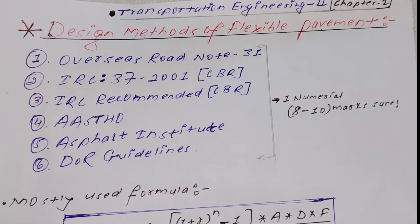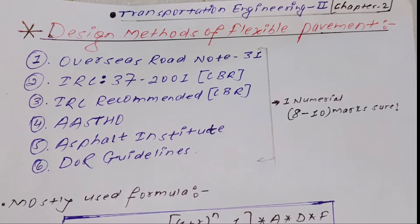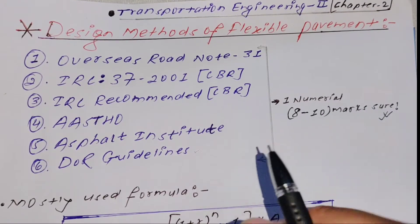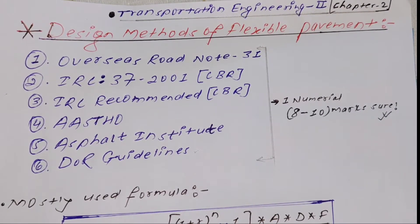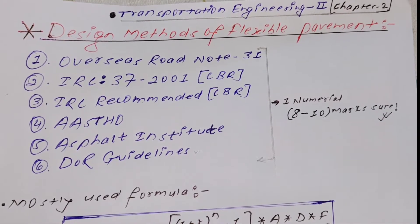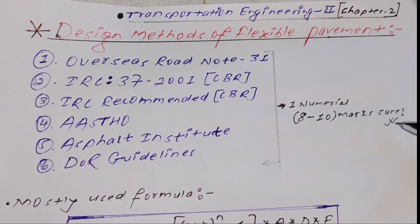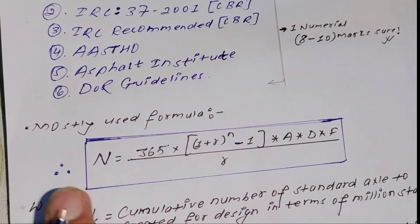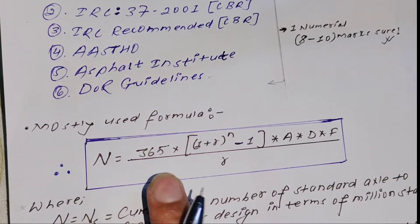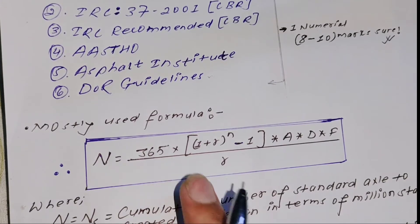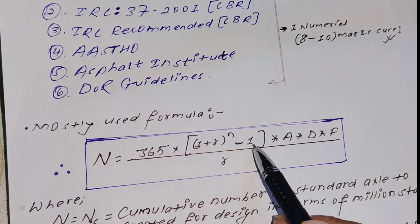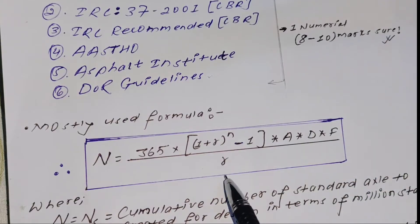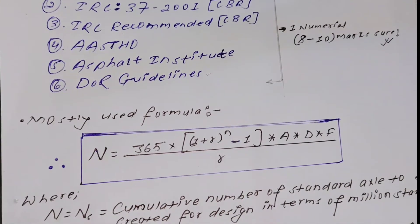From an exam point of view, numericals are mostly small. The key formula is: N = 365 × [(1 + r)^n − 1] / r × A × D × F, where each variable has a specific meaning.